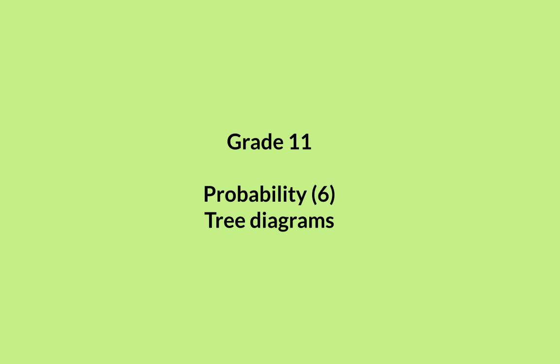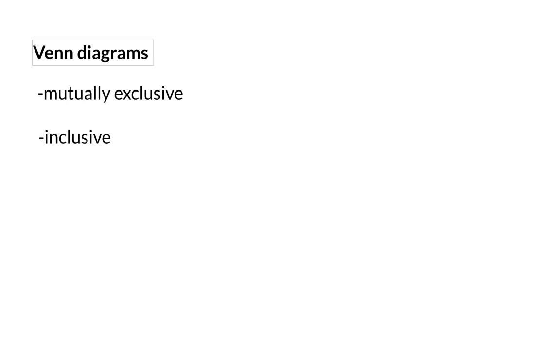In this last lesson for grade 11 probability, we're going to have a look at how tree diagrams can help you determine the probability. We've already had a look at two other representations for probability. Firstly, we had a look at Venn diagrams, and Venn diagrams can be used for mutually exclusive or inclusive events, which means they can also be used for independent events.